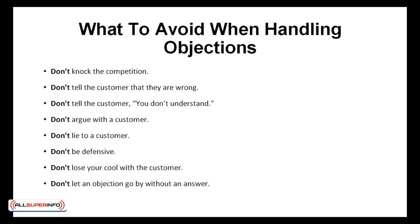Besides the common sales objections you need to deal with, there are also other aspects to avoid when handling objections. Don't knock the competition — that takes the focus off of you and your company. Don't tell the customer they're wrong. Don't tell the customer you don't understand. Don't argue with the customer. Don't lie to a customer — long-term relationships are built on trust and honesty; it's far better to say 'I don't know, but I'll find out and get right back to you.' Don't be defensive — that is not a positive approach to an objection. Don't lose your cool with the customer. Don't let an objection go by without an answer.